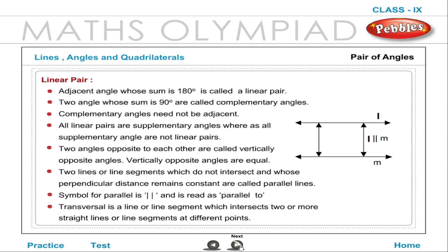Two lines or line segments which do not intersect and whose perpendicular distance remains constant are called parallel lines. The symbol for parallel is ∥ and is read as 'parallel to'. A transversal is a line or line segment which intersects two or more straight lines at different points.